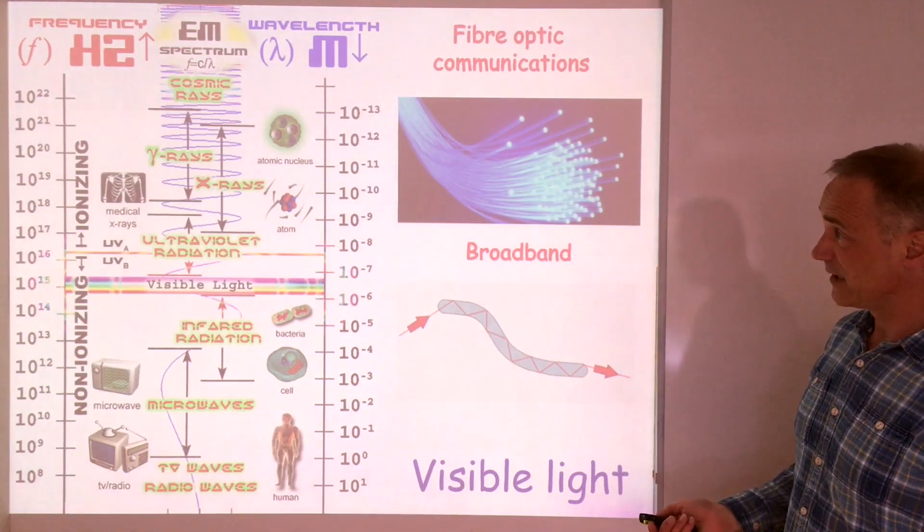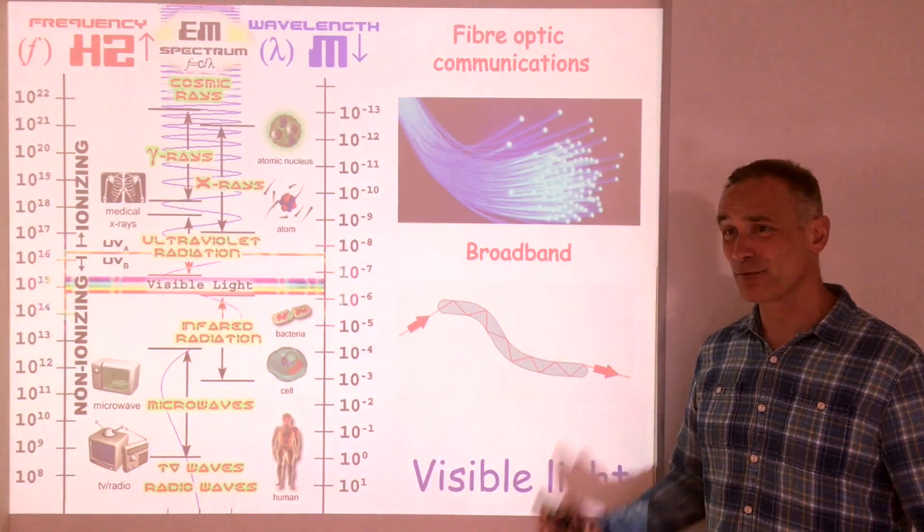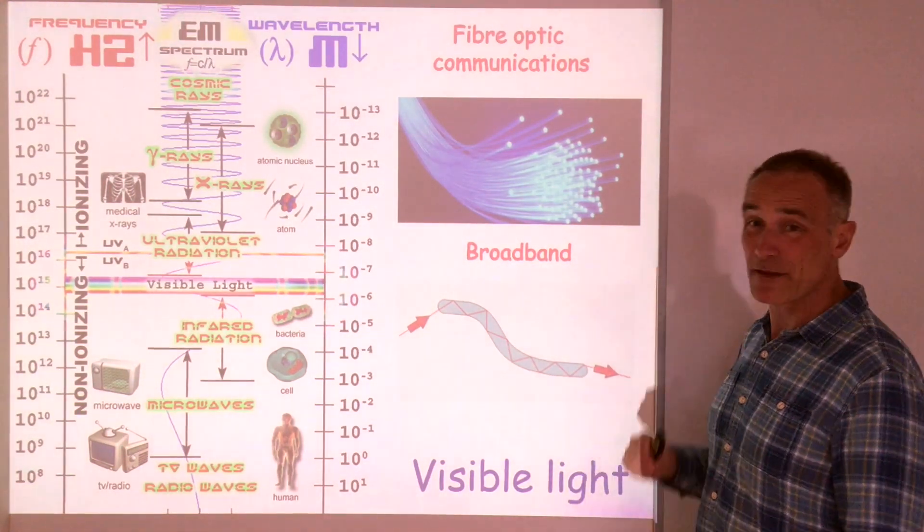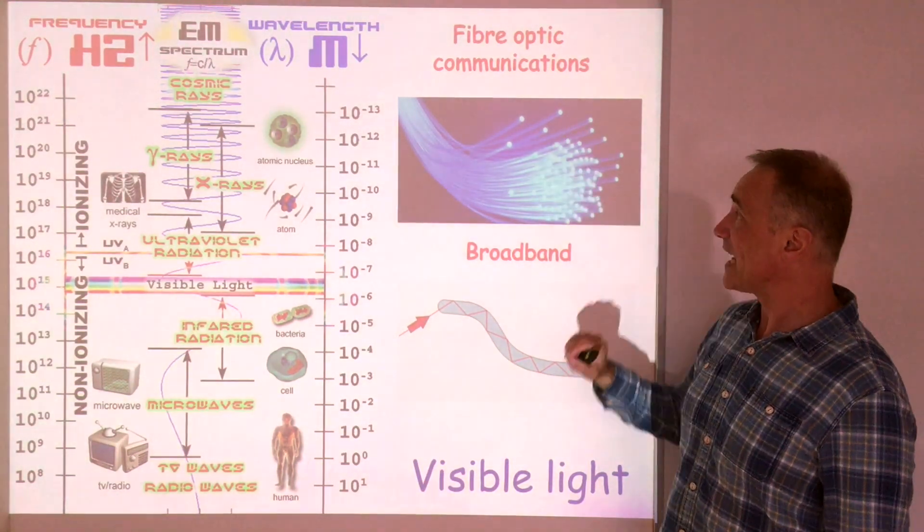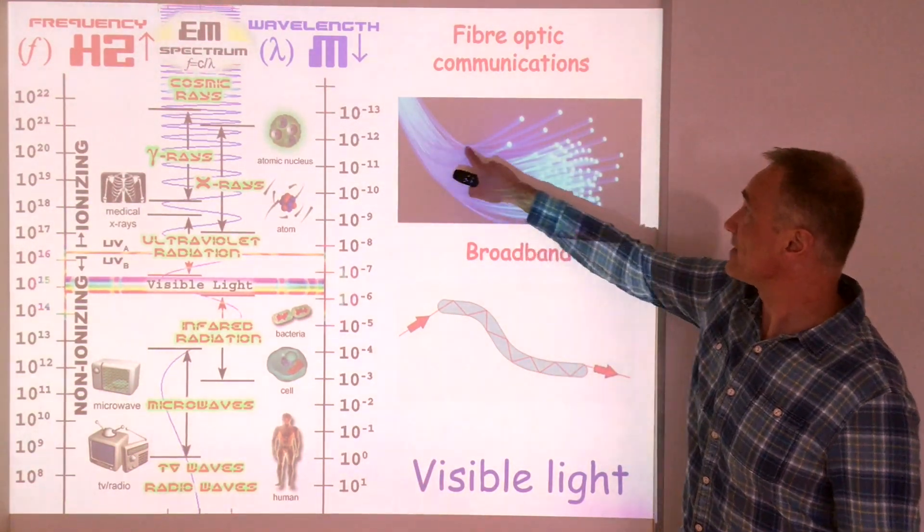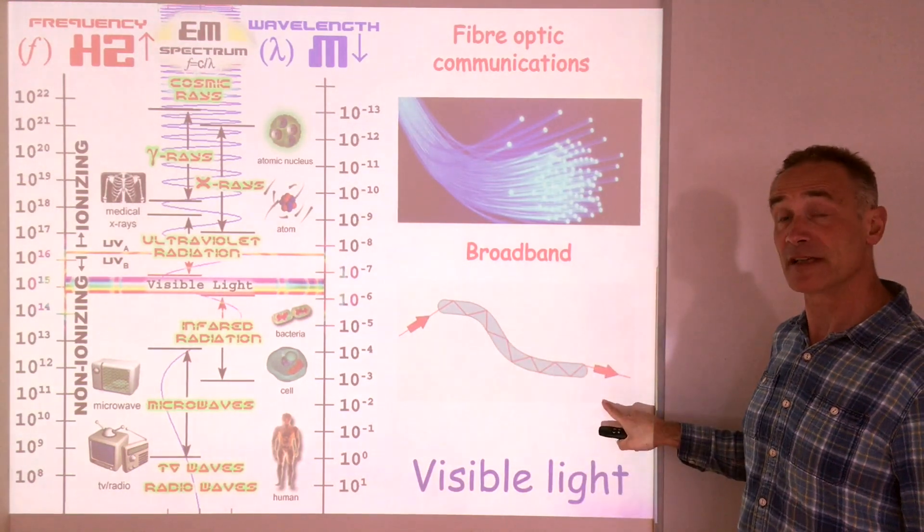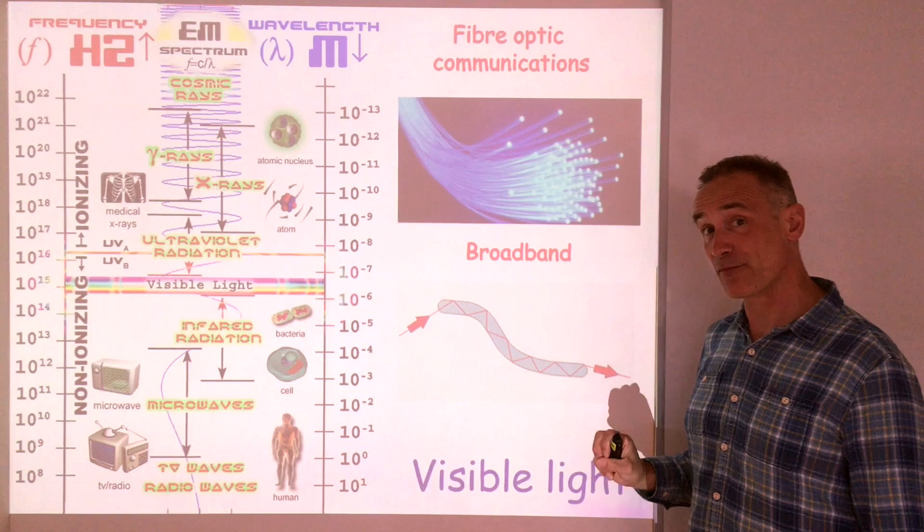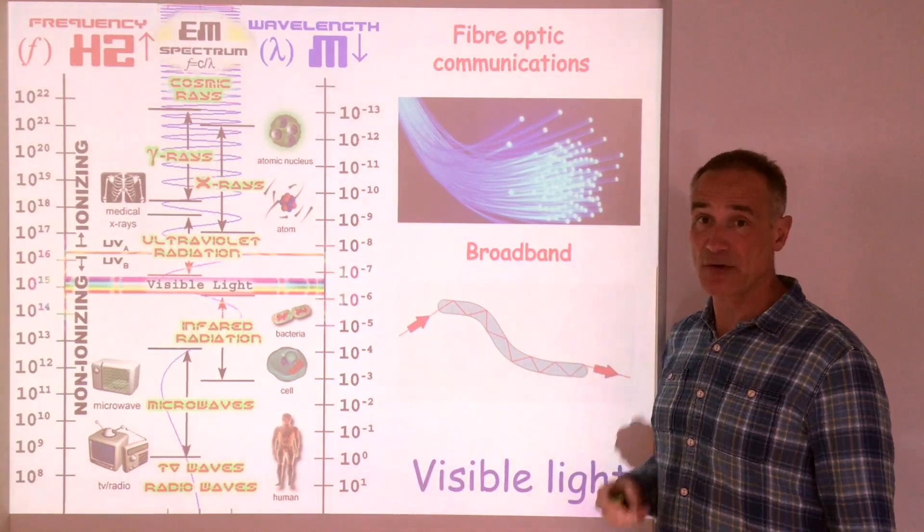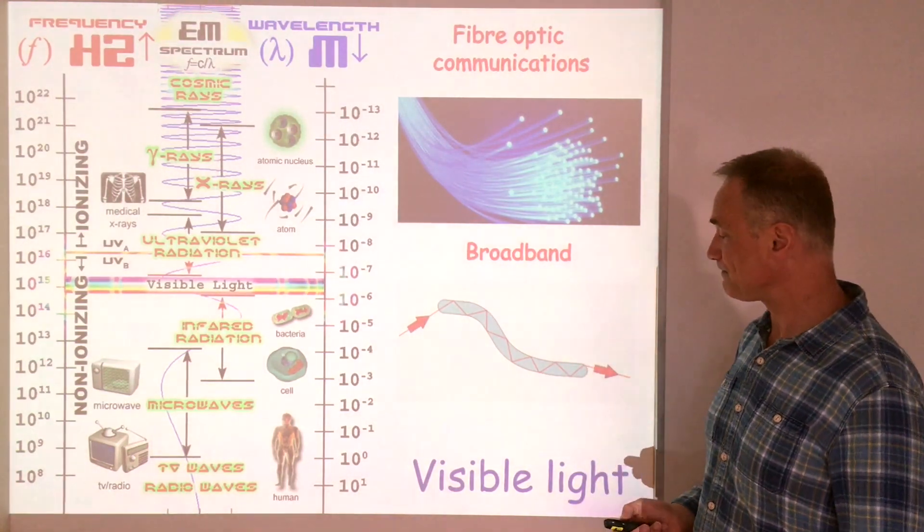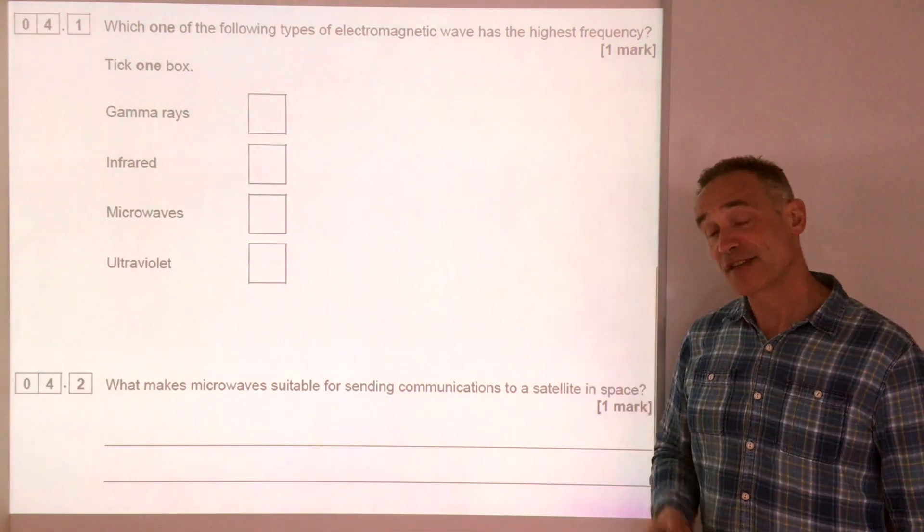Finally, light. Light of course we see with, but actually there's one other thing you need to know. Fiber optic cables send light down the fiber optic by total internal reflection. So we can send signals down the fiber optics using light and that's what happens in broadband.